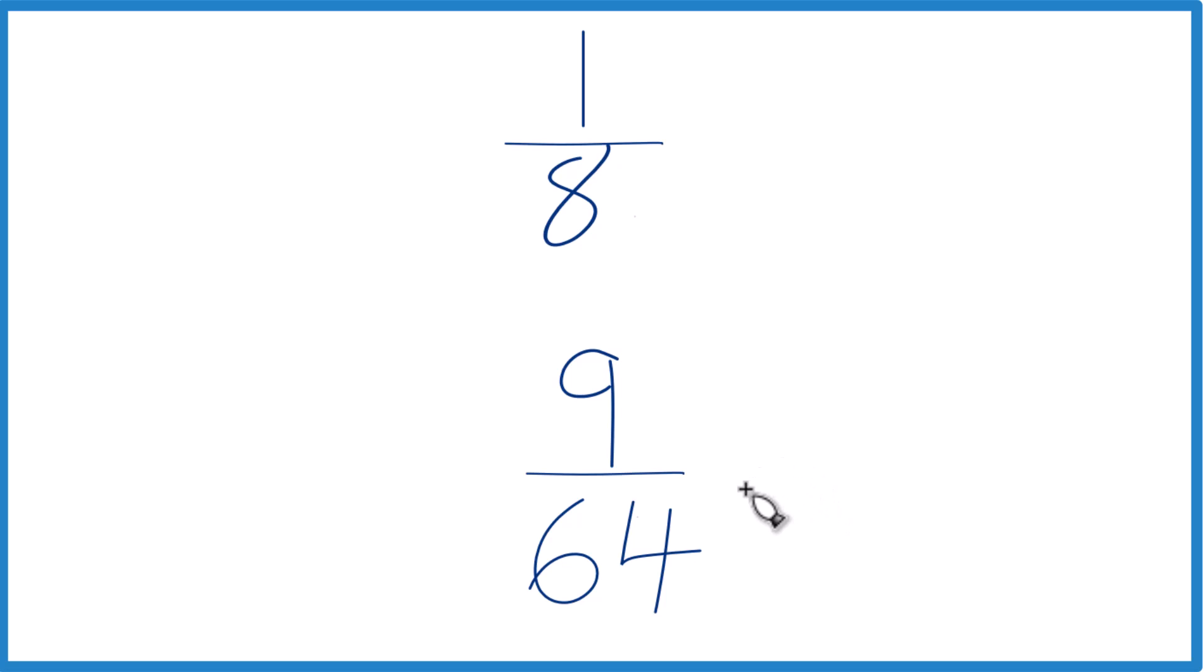We could also look for a common denominator here. So right now we have 8 and 64. But if we could find something that these both go into evenly, we'd have the same denominator, just compare the numerators, we'd be done.